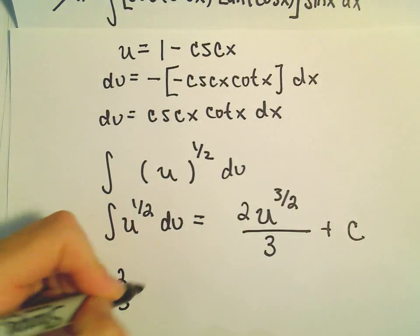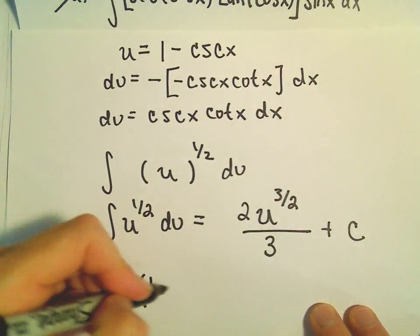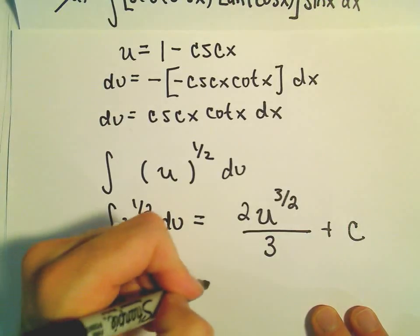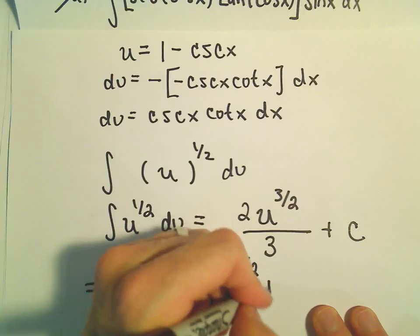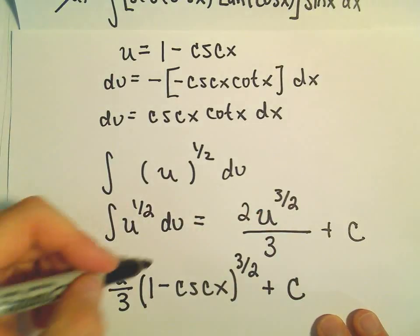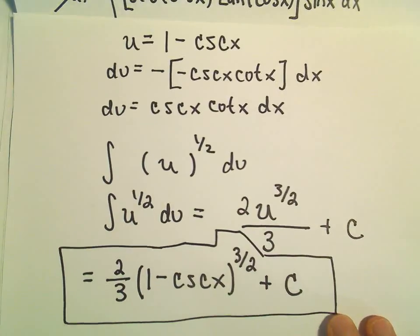And now all we have to do is replace u, which we said was going to be 1 minus cosecant. That's being raised to the 3 over 2 power plus c. And now we have found our most general antiderivative of that function.